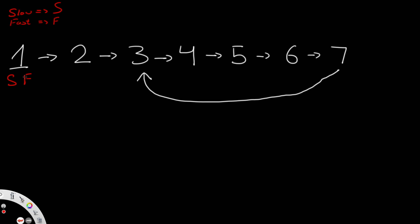Let's see what happens. The slow pointer takes one step, so it moves to two. Since the slow pointer took one step, the fast pointer takes two steps — one and then two — so the fast pointer is now at three. Let's continue this pattern. The slow pointer moves to three, and the fast pointer moves two steps to five.